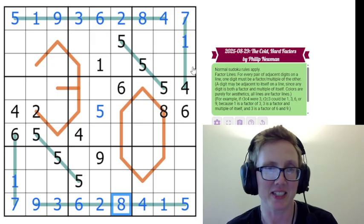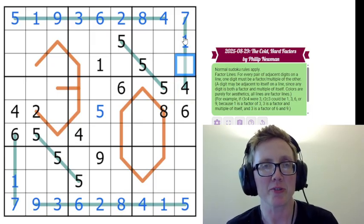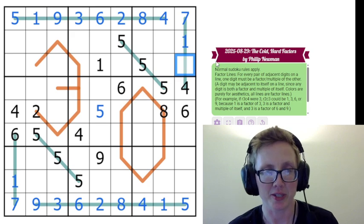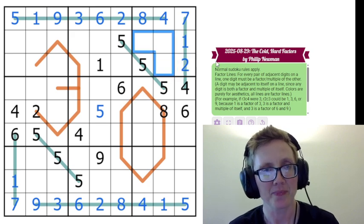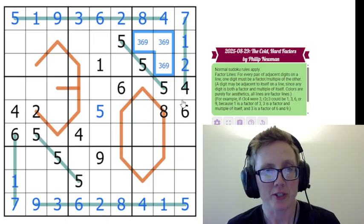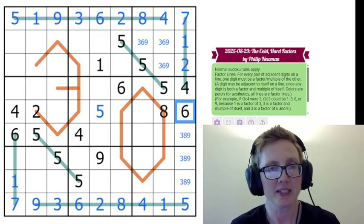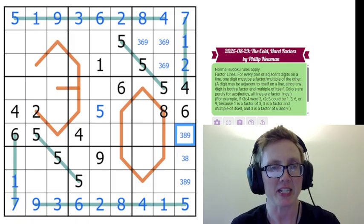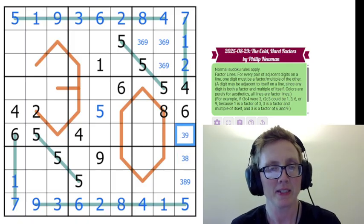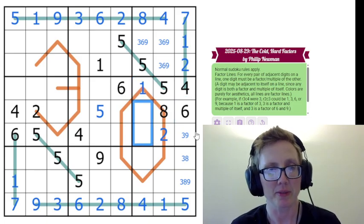And from there, hopefully this is going to get a lot more straightforward. So we need another factor or multiple of 4. We can't use 1, we can't use 8, we can't use 4 itself, so that's going to have to be a 2. And then these three digits will be 3, 6, and 9 to finish the region. These are going to be 3, 8, and 9. We can't have a 9 there and we can't have an 8 here. 8 has to be between a 1 and a 2 because 4 is already used. So these are 3, 7, and 9.